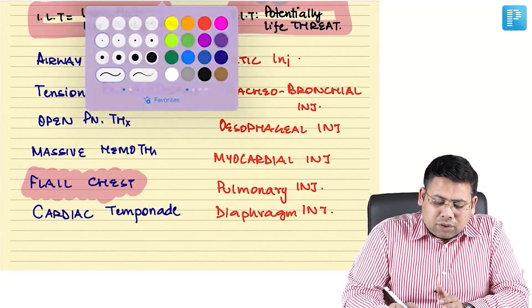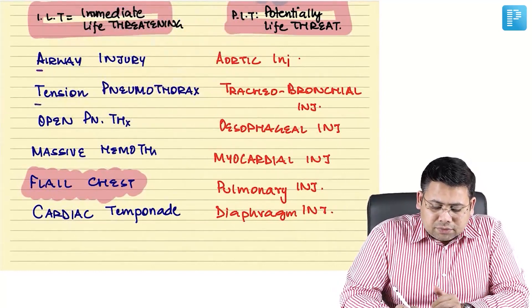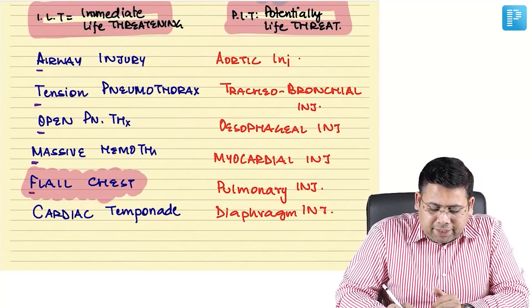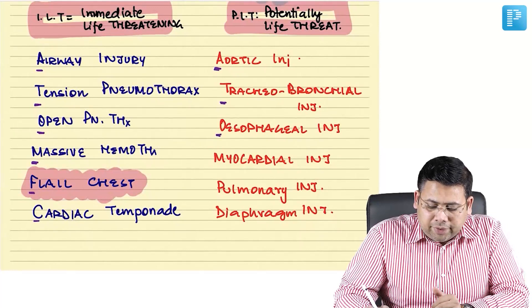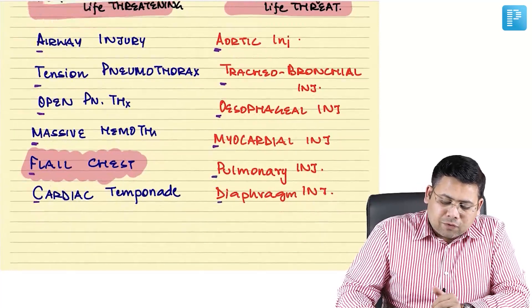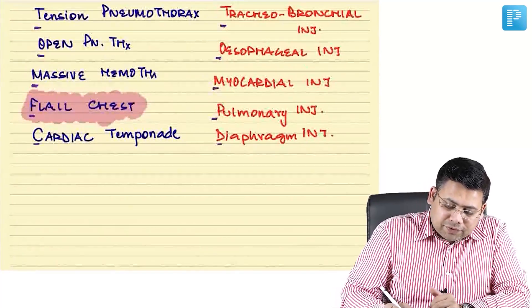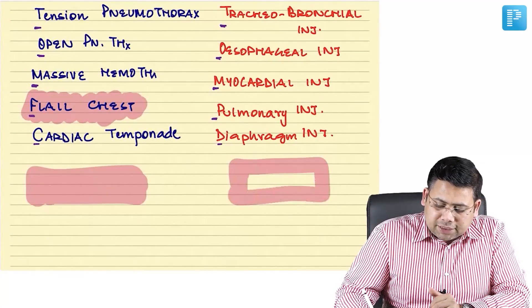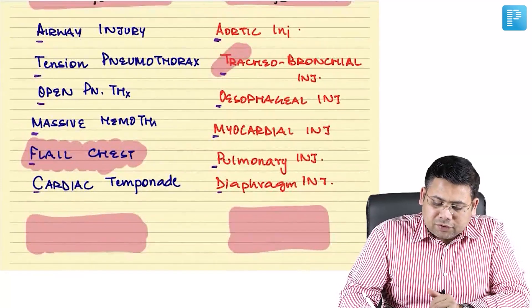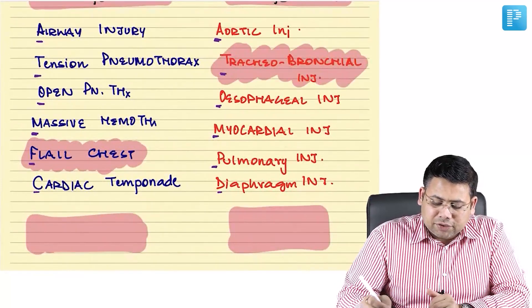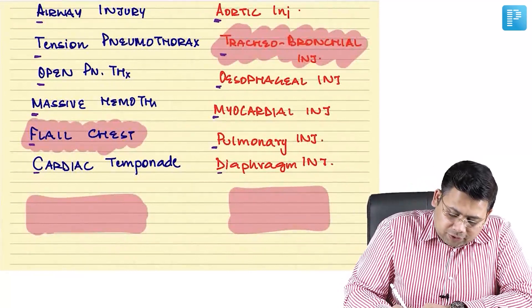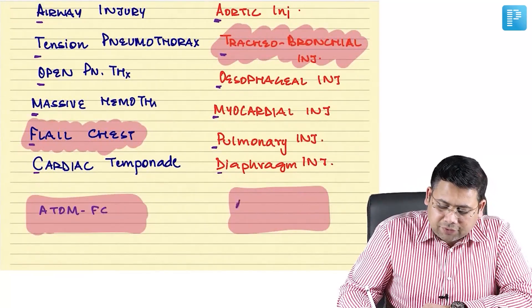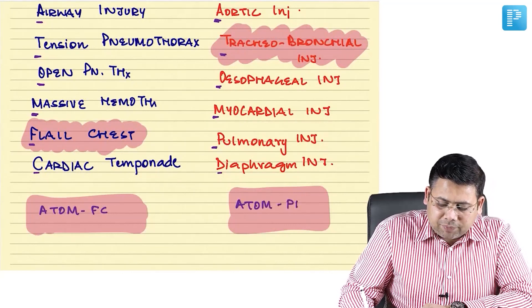We have a mnemonic for these. If you see the initials, we get ATOM FC for the Lethal Six — Airway injury, Tension pneumothorax, Open pneumothorax, Massive hemothorax, Flail chest, Cardiac tamponade — and ATOM PD for the Hidden Six — Aortic injury, Tracheobronchial injury, esOphageal injury, Myocardial injury, Pulmonary injury, Diaphragm injury.